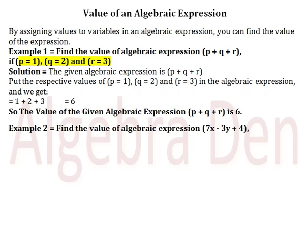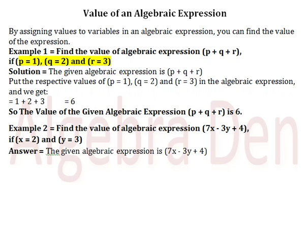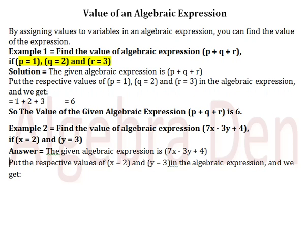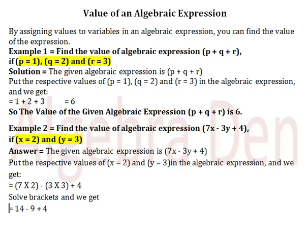Example 2: Find the value of algebraic expression 7x minus 3y plus 4, if x is equal to 2 and y is equal to 3. The given algebraic expression is 7x minus 3y plus 4. Put the respective values of x equals 2 and y equals 3 in the algebraic expression and we get 7 into 2 minus 3 into 3 plus 4. Solve the brackets and we get 14 minus 9 plus 4, which is equal to 9.